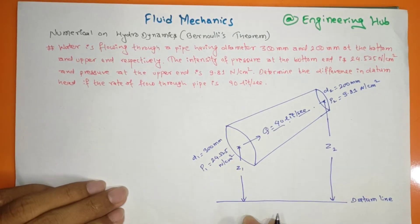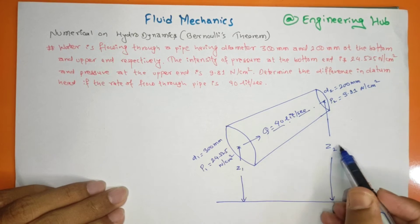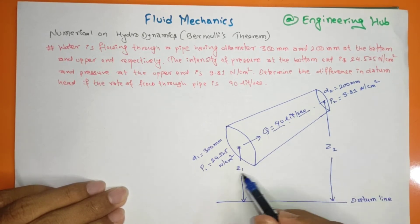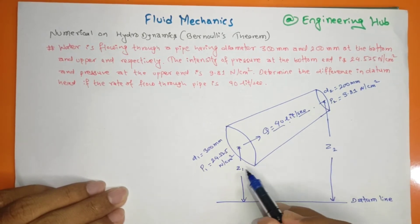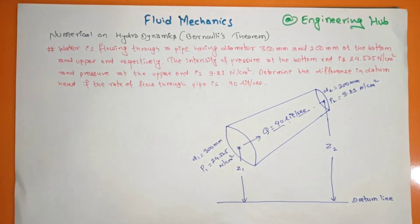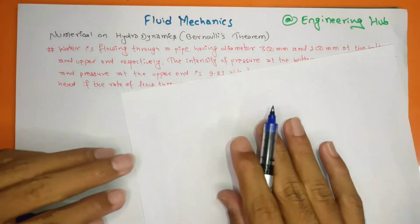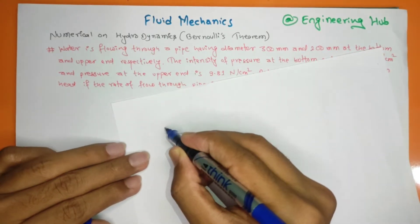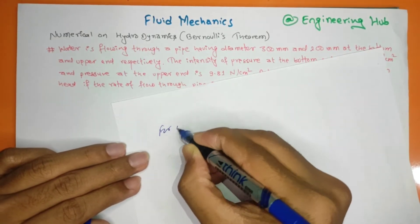The difference in datum head means we need to find Z2 minus Z1. For ideal flow, we apply Bernoulli's equation between the two sections.